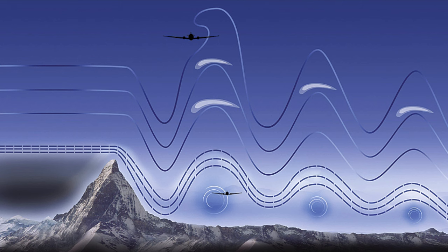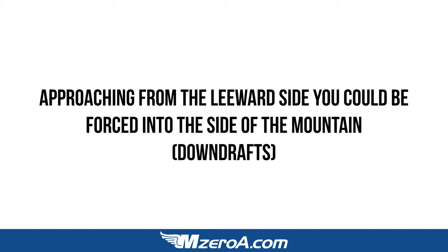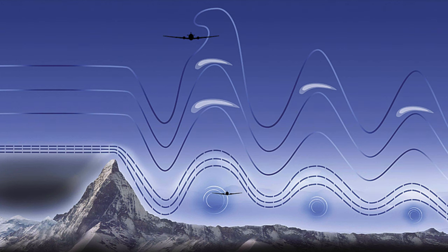Let's talk about a topic we don't discuss a lot — mountain waves. Take a look at this image from the Pilot's Handbook of Aeronautical Knowledge. You can see how mountain waves and terrain can really create turbulence. Approaching from the leeward side, you could be forced into the side of the mountain by downdrafts. On the leeward side, downdrafts can occur — if you're flying with a headwind, you may believe you'll clear the mountain but catch a downdraft instead.